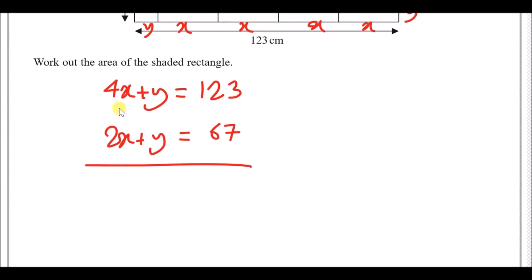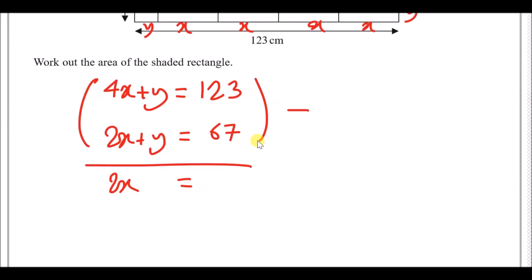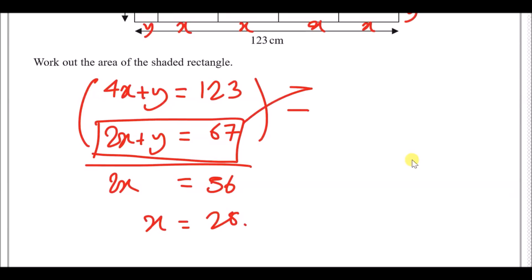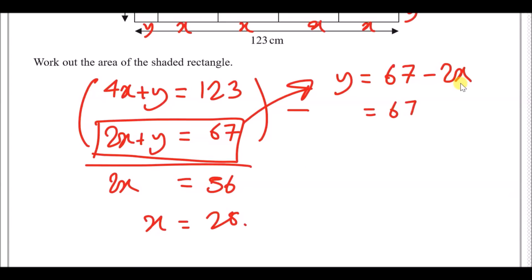Subtracting the second equation from the first eliminates y: 2x = 123 − 67 = 56, so x = 28. Substituting back into 2x + y = 67 gives y = 67 − 56 = 11.